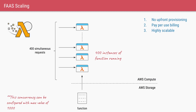Now let's say you have 400 simultaneous requests coming in for your function. In this case, AWS will automatically deploy 400 instances of your same function, so you will have 400 lambdas running at the same time. This is called function concurrency, and you can configure it. This again highlights no upfront provisioning — you never say have one instance running 24/7 — and highly scalable provisioning, so however many simultaneous requests you get, that many copies of your function run simultaneously.